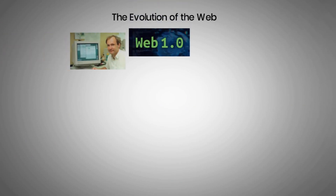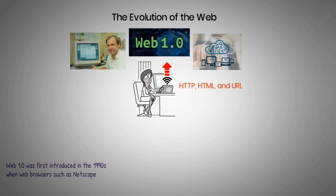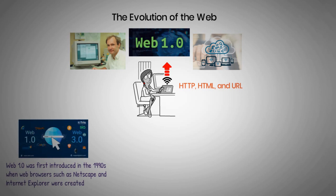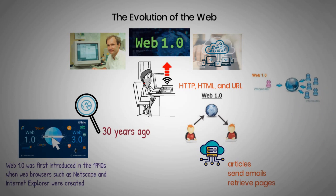The evolution of the web. Tim Berners-Lee, an employee at CERN, a European research center, was the first to bring the internet to life. Berners-Lee created some of the core technologies associated with the internet, including HTTP, HTML, and URL. Web 1.0 was first introduced in the 1990s, when web browsers such as Netscape and Internet Explorer were first created. Users had limited access to static web pages stored on servers, and could only read news articles, send emails, and retrieve pages. Web 1.0 could only access a handful of interactive features, gradually enhanced with the advent of online banking.